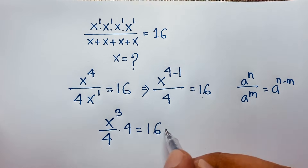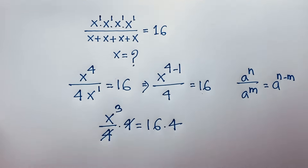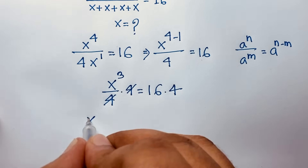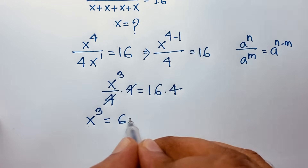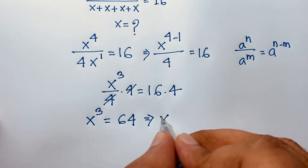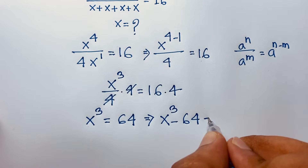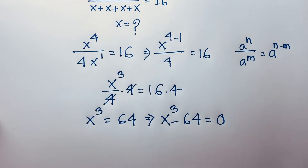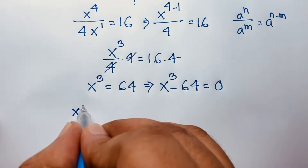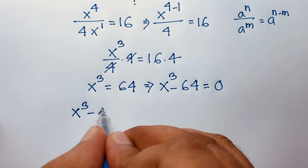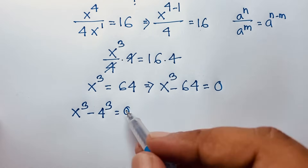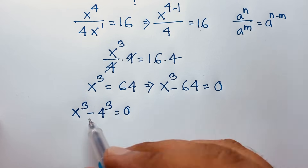Then I multiply both sides by 4. This 4 cancels out, and we find a nice cubic equation: x cubed is equal to 64. We can verify that 4 times 4 is 16, and 16 times 4 is 64, so 64 equals 4 to the power 3.